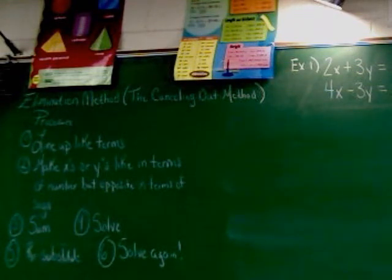Step two says to make X's or Y's like in terms of number but opposite in terms of sign. So the number in front of either X or Y, it doesn't have to be both, it's just got to be one. You've got to make it so that it's the same number in front of X or Y, but that the sign in front of them is different. So there's a negative in front of one and a positive in front of the other. Like in terms of number, opposite in terms of sign.